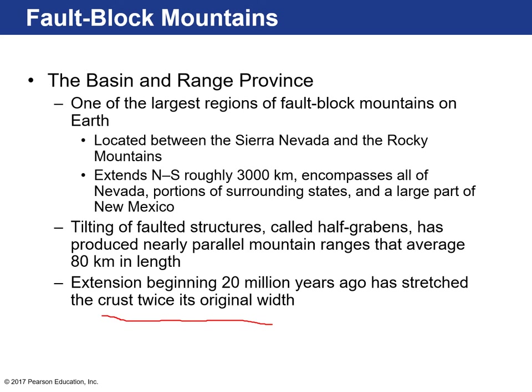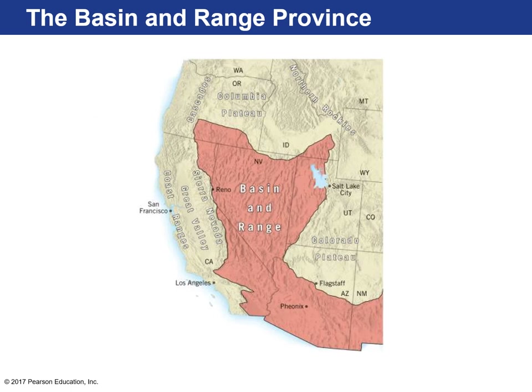Because of that stretching, you start creating normal faults. Here's the entire Basin and Range province — it includes a lot of Arizona, Southern California, and most of Nevada. This whole area is experiencing stretching. Pulling apart creates those normal faults, and you can actually see the terrain with those north-south ranges and basins all over the state of Nevada. Essentially, it's like a stretch mark on the surface of the Earth.